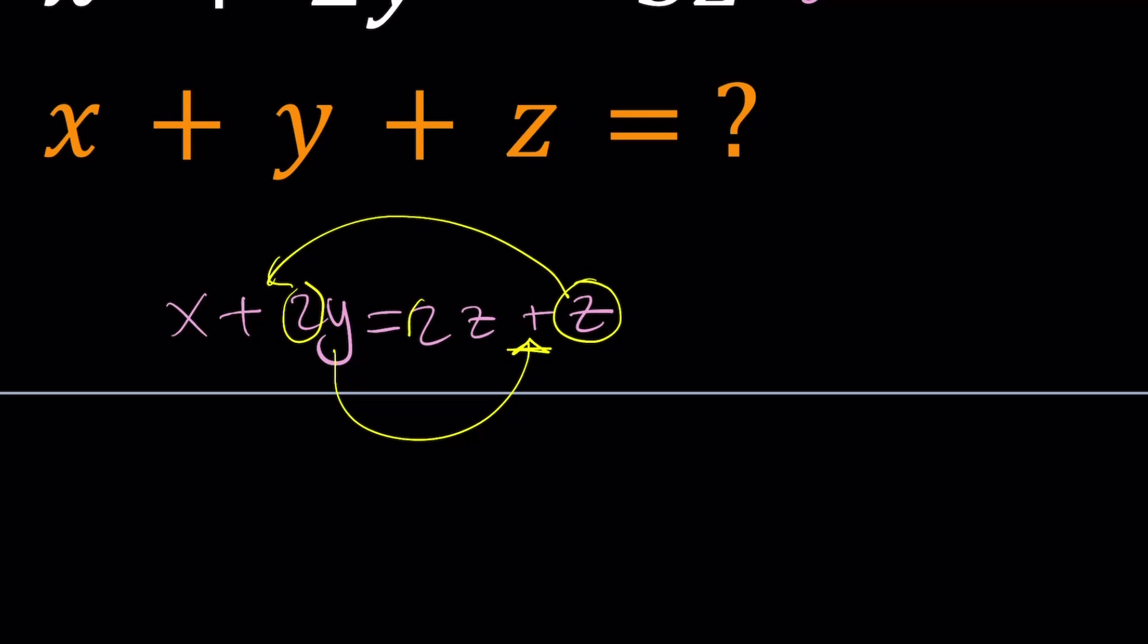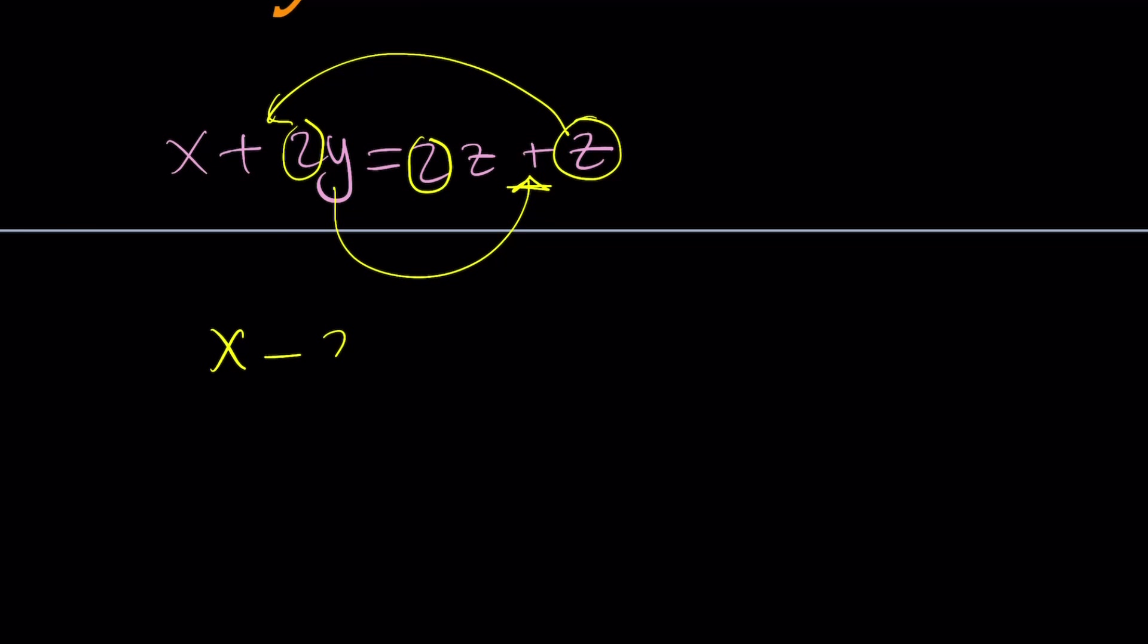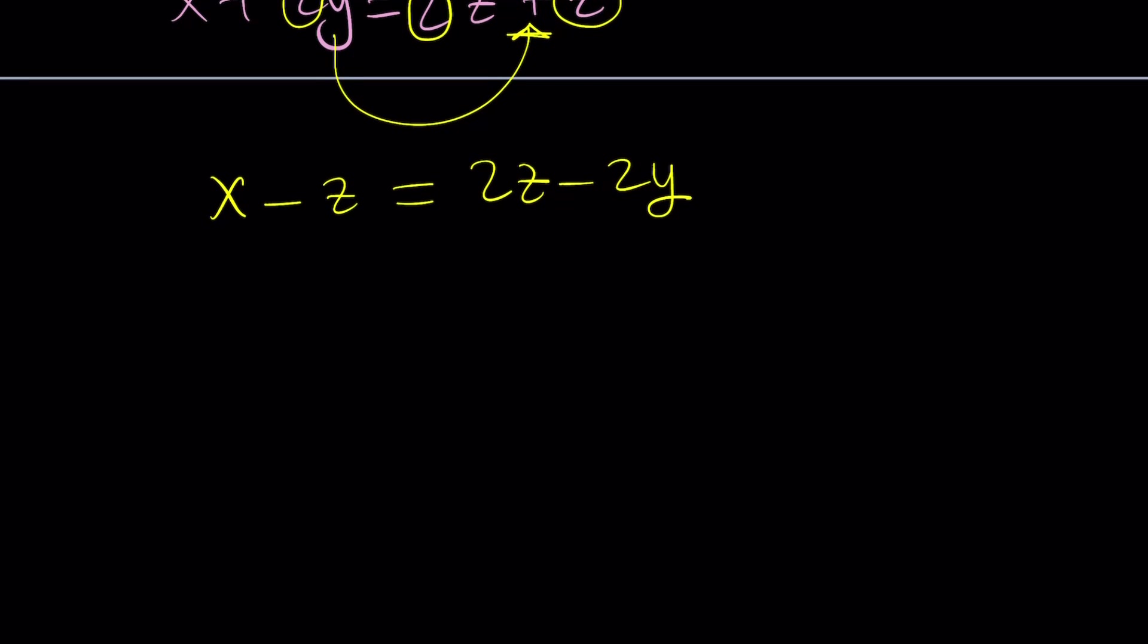I'm going to bring this z over here by way of subtraction, and send the 2y to the right-hand side. And there's a good reason behind it. These two expressions have the same coefficient, and x and z obviously have the same coefficient. So I wanted to get something factorable on both sides. And so now I can crisscross applesauce: x minus z equals 2z minus 2y. Obviously, from here, we're going to factor out a 2, and write this as x minus z equals 2 times z minus y. Let's go ahead and box it, because we're going to use this later on.